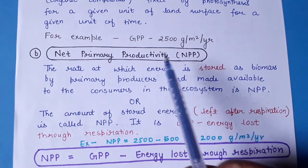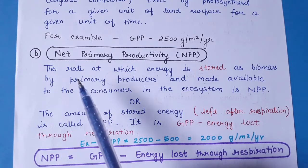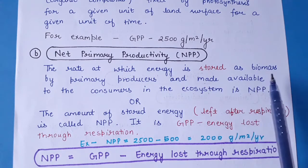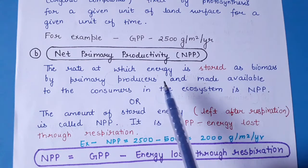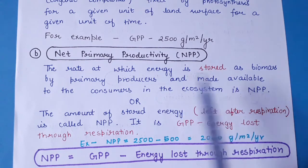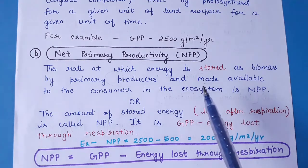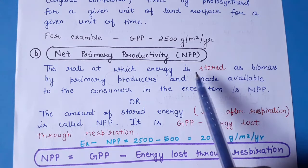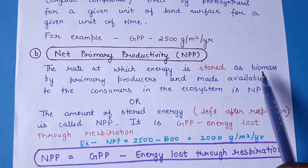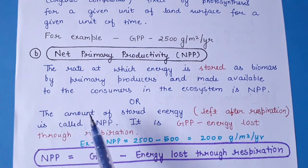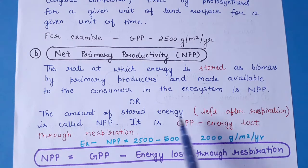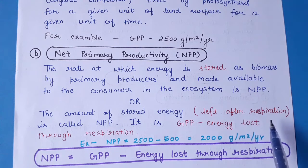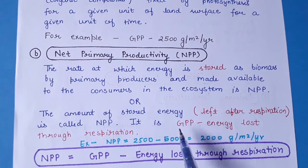Net primary productivity is the rate at which energy is stored as biomass by the primary producers, or the energy made available to consumers in the ecosystem. While GPP is the total amount of productivity, NPP is the energy stored as biomass — that is, the amount of energy left after respiration. It can be expressed as: NPP = GPP minus the energy lost through respiration.